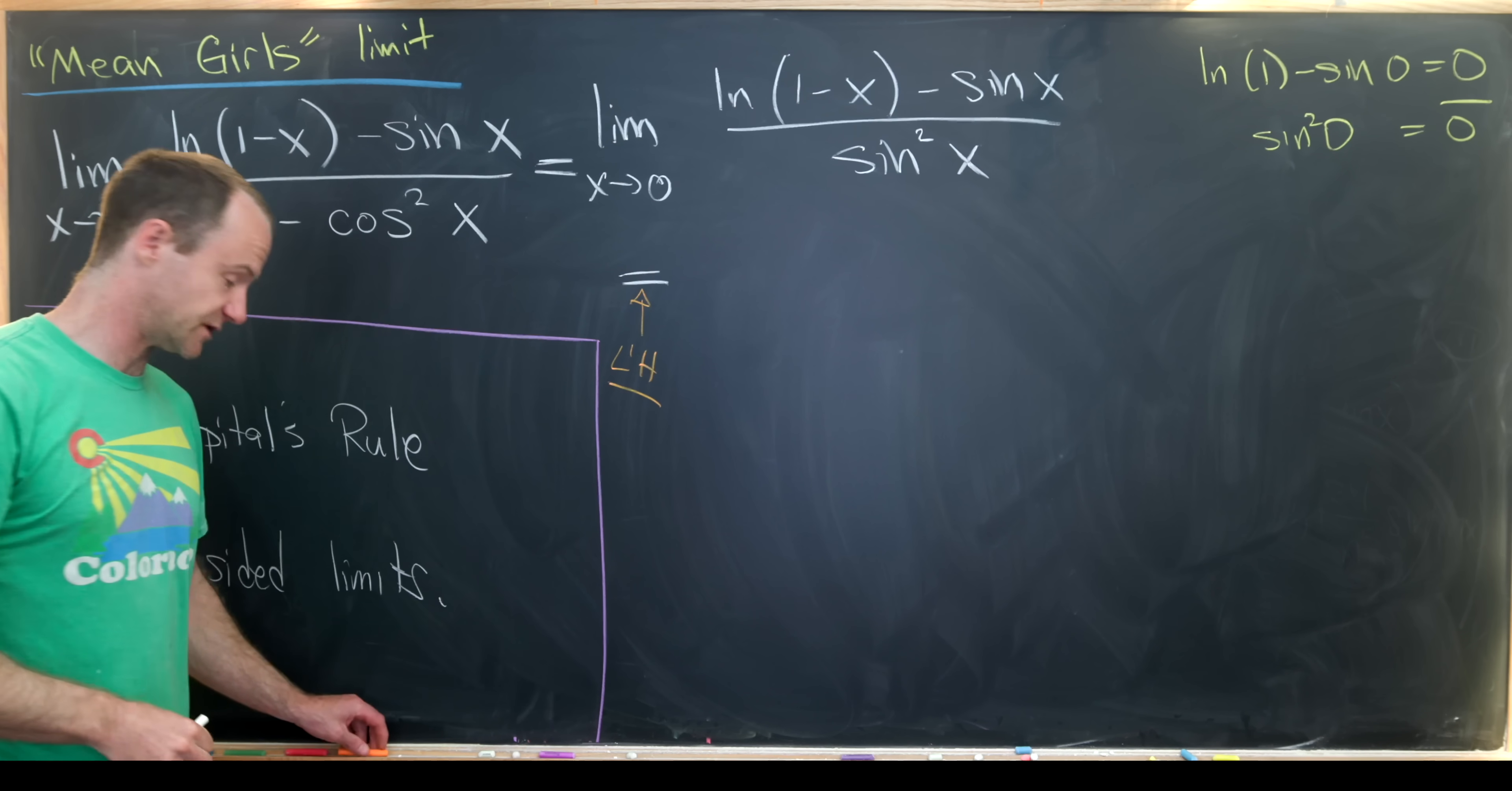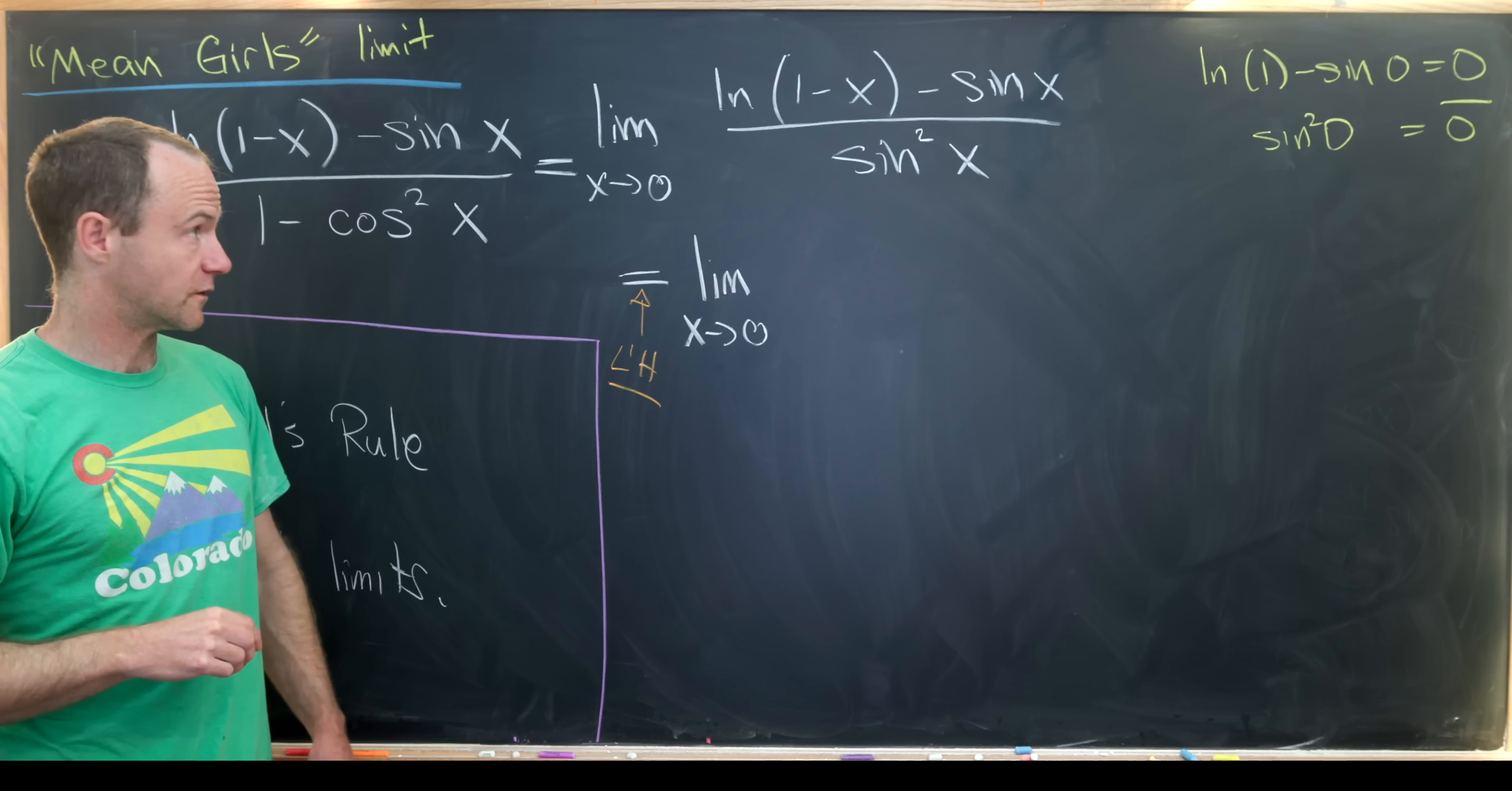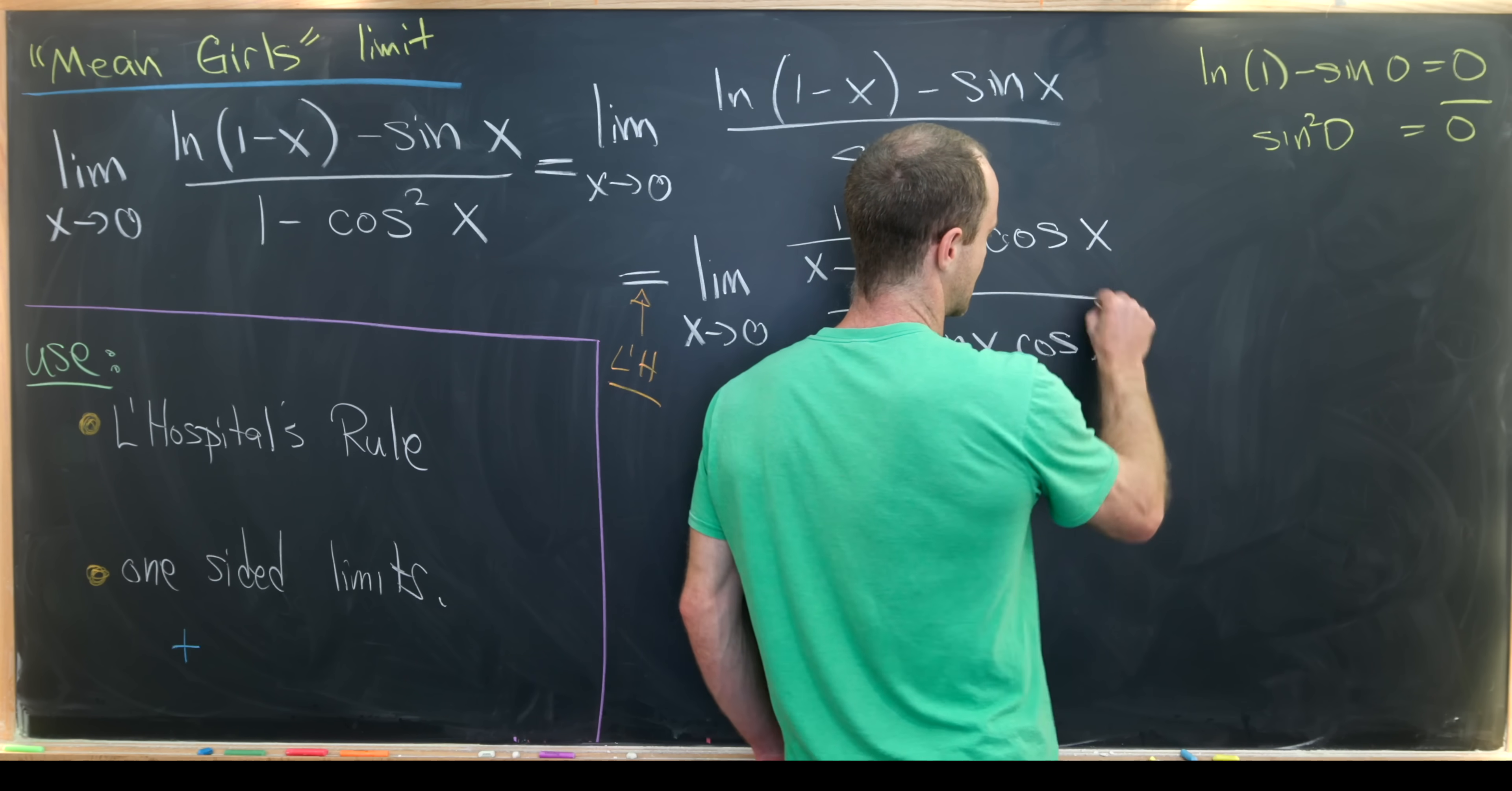Let's recall L'Hopital's rule says that this sort of limit has the same behavior as the limit of the quotient of the derivative of these two functions. So the derivative of the numerator: the derivative of the natural log will be 1 over 1 minus x, but then we pick up a minus sign because of the chain rule. I'll let that change the order of subtraction, leaving us with 1 over x minus 1. Then the derivative of sine is cosine, so we get minus cosine of x. Then we've got to use the chain rule for sine squared as well. That will give us 2 times sine of x times cosine of x.